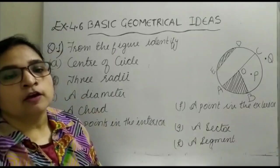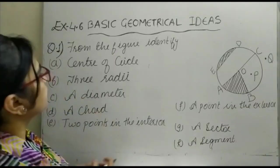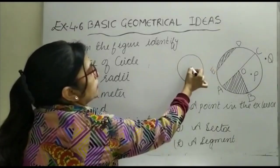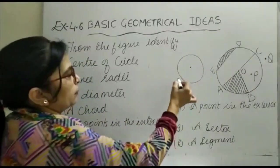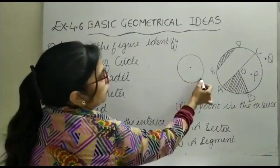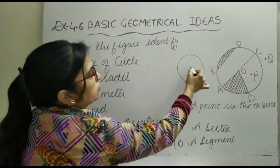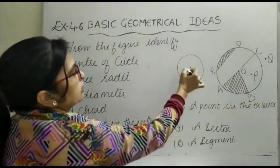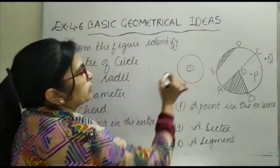We all know a circle has a center. A circle is the set of all points equidistant from a fixed point. This fixed point is known as the center.